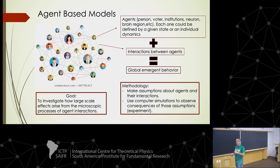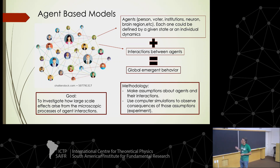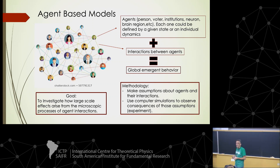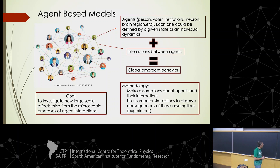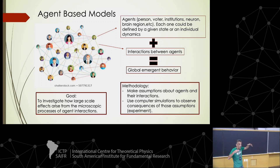What are the ingredients of an agent-based model? Agents could be persons, voters, institutions, neurons, brain regions, animals, genes, proteins — whatever are the minimal ingredients. Each agent is defined either by a variable which can take different states or even by a dynamical unit, plus interactions between agents that could be mapped using complex networks. With this combination, we study the global emergent behavior of the system. The usual methodology is to make assumptions about individual agent behavior and interactions, then use computer simulation to observe the consequences at a global level.